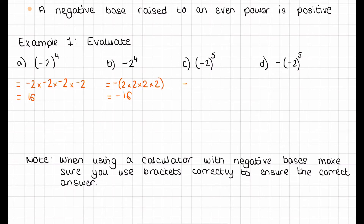Part C is the same as part A, just with one more negative 2 added on, which gives us negative 32. Remember, when you have a negative base and the power is odd, you get a negative answer. And the last one, we have negative times negative 2 to the power of 5, which will be negative. Since negative 2 to the power of 5 is negative 32, the answer will just be 32.